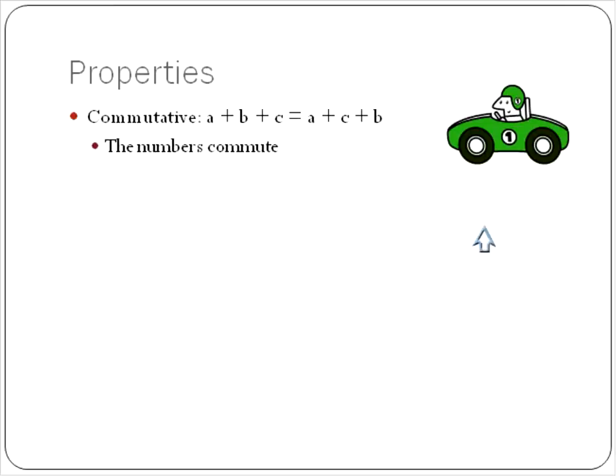If you've ever heard that word like maybe your parents commute to work, maybe you commute to school, it means that you move there, right? Like you drive. Well, in this case, you have A plus B plus C. You have the same exact three numbers, only they've moved around. They've gone somewhere else.